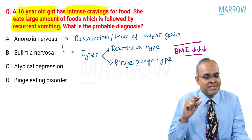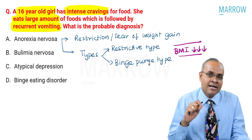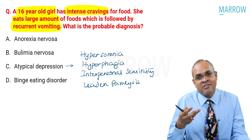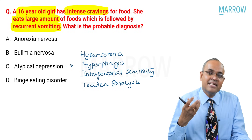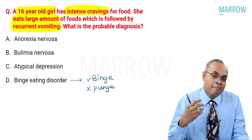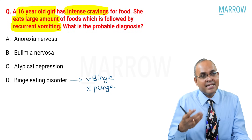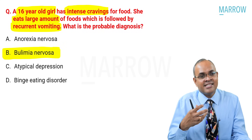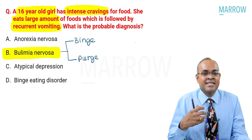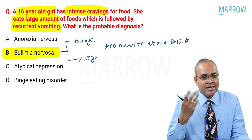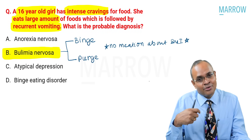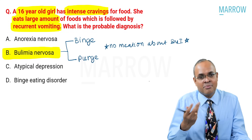BMI criteria is an important criterion to diagnose anorexia nervosa. In atypical depression, patients have hypersomnia, hyperphagia, interpersonal sensitivity, and leaden paralysis — so we are not talking about atypical depression here. Binge eating disorder has binge eating but typically no purging, whereas this question mentions recurrent vomiting. Since there is no mention of BMI and purging is present, the best answer here is bulimia nervosa, which involves binge and purge eating. Without the low BMI criterion, you cannot diagnose anorexia nervosa.